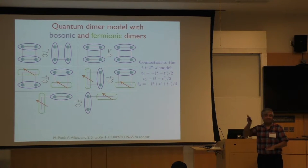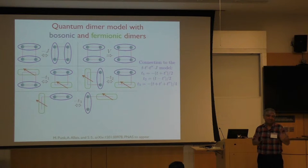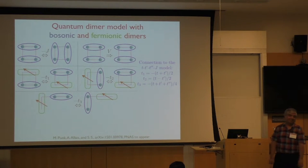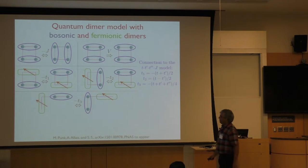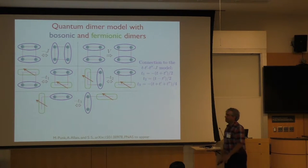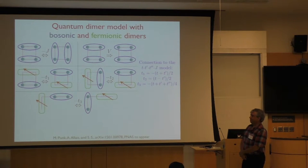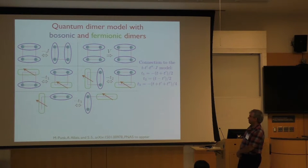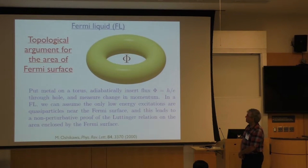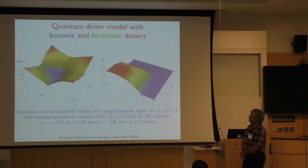So relative to the energy scale of J, which is 1000 Kelvin, maybe 250 Kelvin is pretty low. Question about the temperature dependence of the length of the arc. Answer: That may well have to do with pairing or density wave fluctuations. I don't know how to address that — you need something else when going down to lower temperatures.